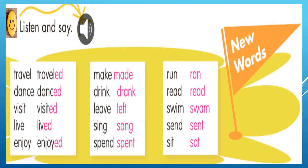Revisemos que los verbos en la segunda columna están en pasado simple. Travel: viajar; dance: bailar; visit: visitar; live: vivir; enjoy: disfrutar; make: hacer; drink: beber; leave: partir; sing: cantar; spend — si utilizamos spend time: pasar tiempo; spend money: gastar dinero. Run: correr; read: leer; swim: nadar; send: enviar; sit: sentarse.